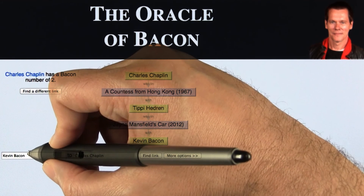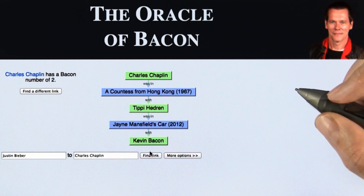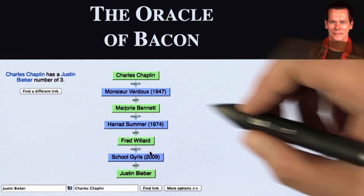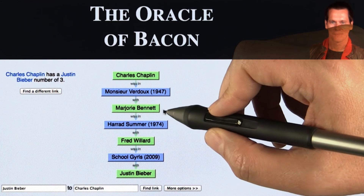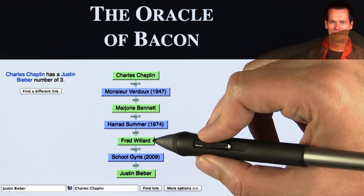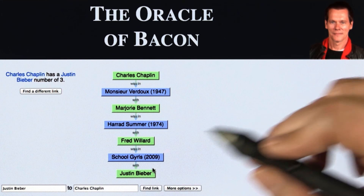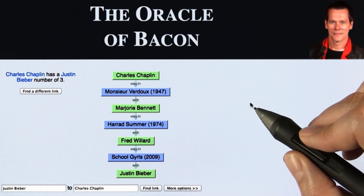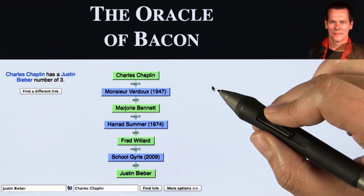We can find other people. Let's connect Charlie Chaplin and Justin Bieber — we'll see that that ends up being more than two links. And indeed: three links. Charlie Chaplin to Marjorie Bennett to Fred Willard to Justin Bieber — one, two, three links. So the movie graph is just not really all that wide, at least among the people that are reasonably well known. But that gives you a feel for the way that the problem works.